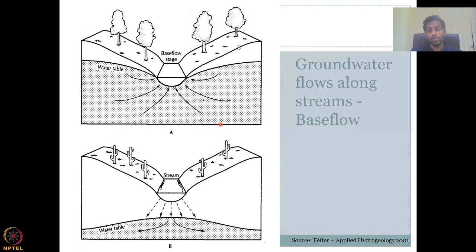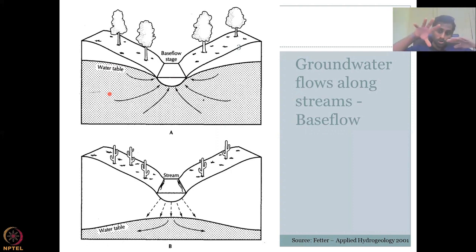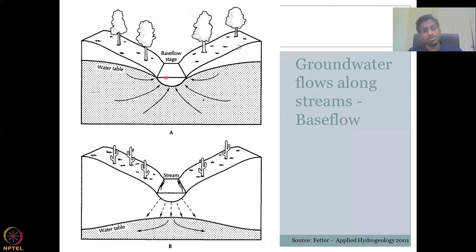Let's look at the base flow concept. Your water table — the height of your groundwater level — has porous media with solid particles, whereas a river or stream is surface water with no porous media. Water in groundwater can only flow when the water table is achieved. The arrow marks show water moving to the stream because the stream is at a lower potential compared to the high potential in the water table, so water flows from high to low potential.